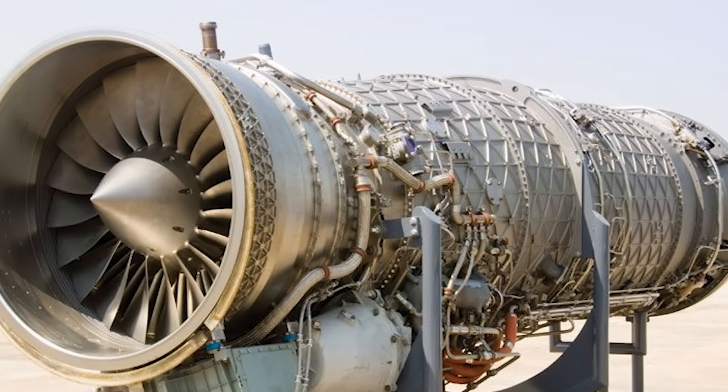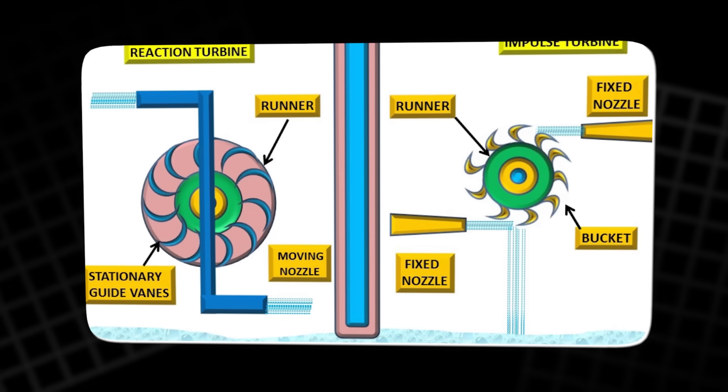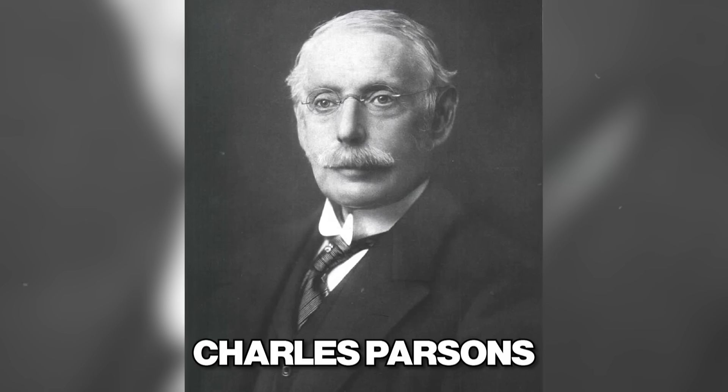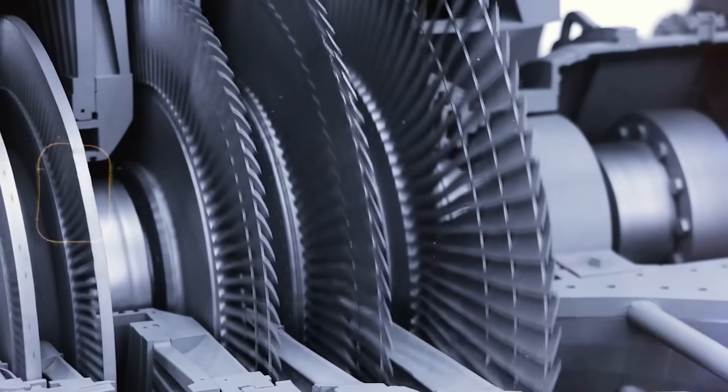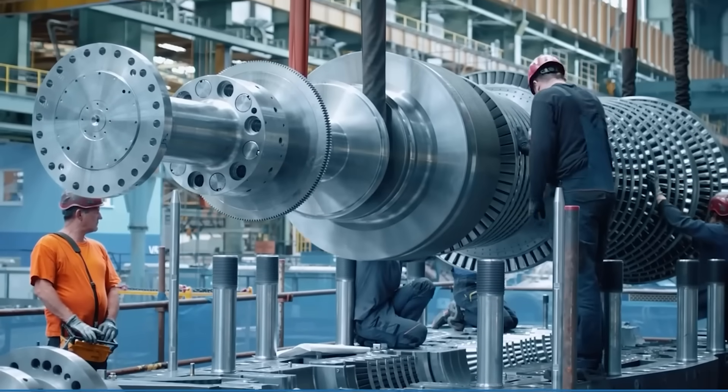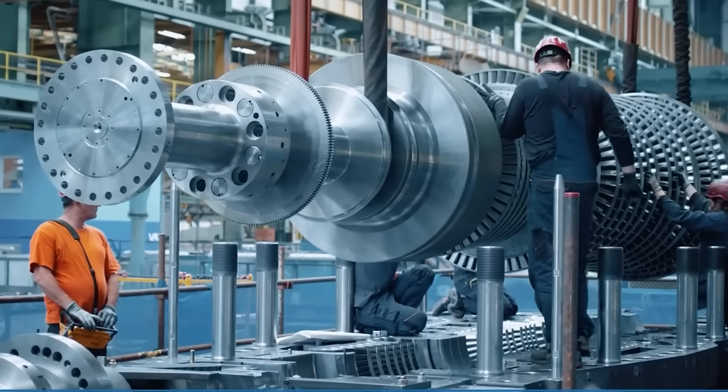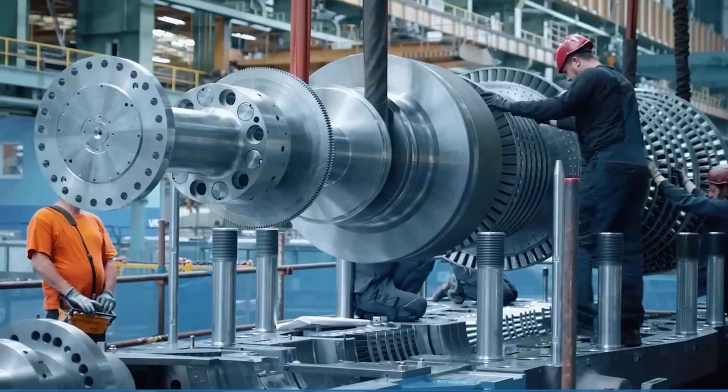Two major designs emerged: reaction turbines and impulse turbines. A reaction turbine, like the one later perfected by Sir Charles Parsons, works by guiding steam through alternating rows of fixed and moving blades. Each stage extracts some of the steam's energy in a smooth, continuous process.